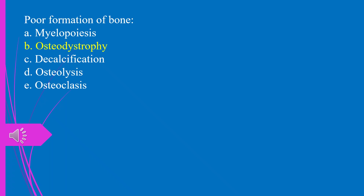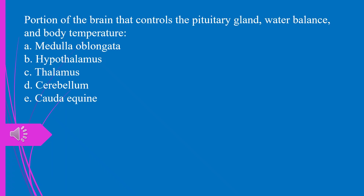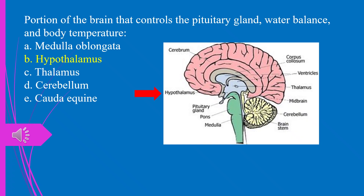Question 23. The portion of the brain that controls the pituitary gland, water balance, and body temperature: a) medulla oblongata, b) hypothalamus, c) thalamus, d) cerebellum, e) cauda equina. The answer is b, hypothalamus.